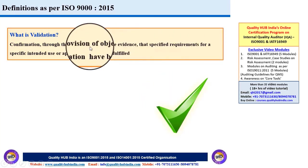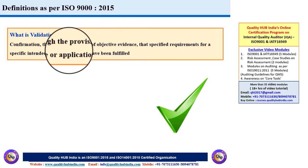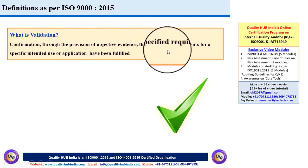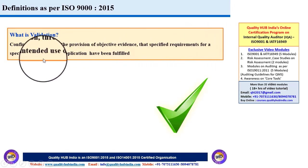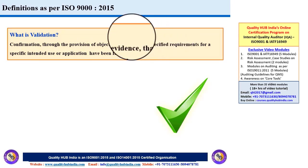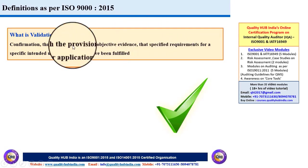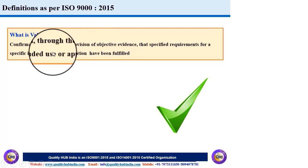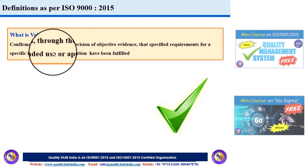Now let's talk about validation. The definition of validation is: confirmation through the provision of objective evidence that specified requirements for a specific intended use or application have been fulfilled. If we look at the requirements of verification and validation, you can see the difference. In validation, it talks about application — the actual use of the product or services that has been fulfilled.